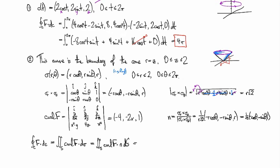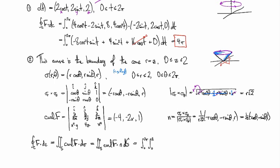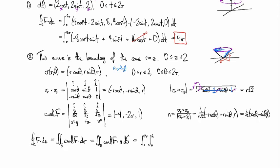So that we've got curl F dot N dS, which is going to be the integral from 0 to 2π, according to our parametrization and 0 to 2.